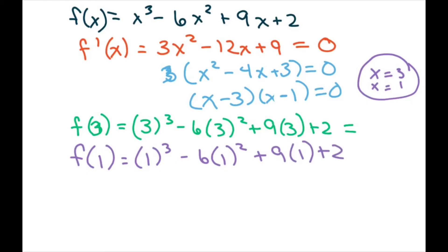Now, when you plug in the 3, you're going to get, I believe, you plug in 3, you're going to get 2. And when you plug in the 1, you're going to get 6. So, your critical, your min and max values, we'll have to determine what that is. It's going to occur at 3, 2 and 1, 6. So, remember those.